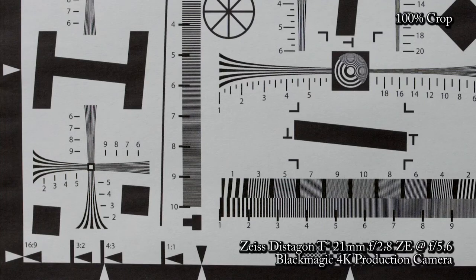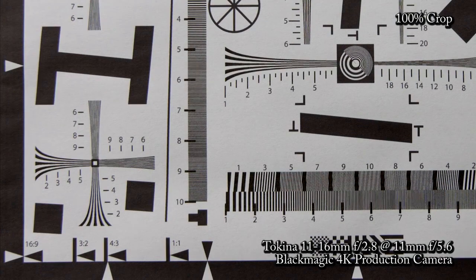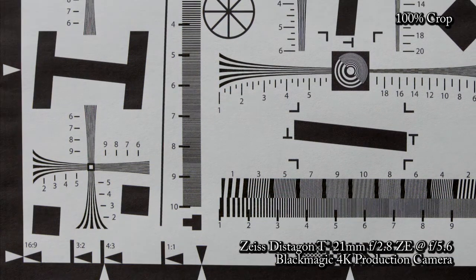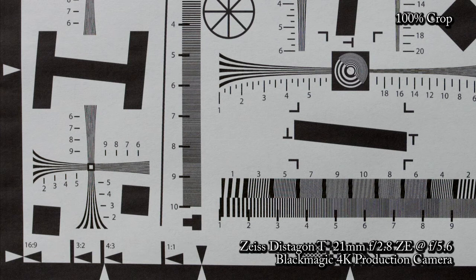To go to the Zeiss 21mm after the Tokina is like seeing HDTV over standard def. The corners in particular are as different as could be in sharpness and chromatic aberration but given the massive price difference you'd expect so.